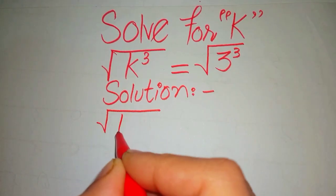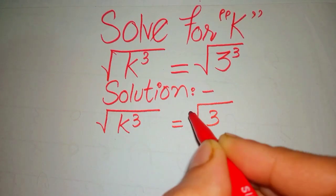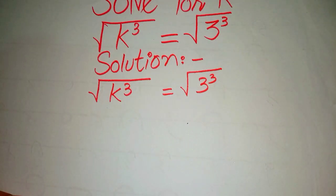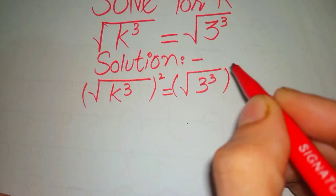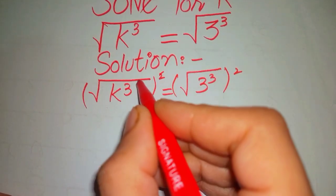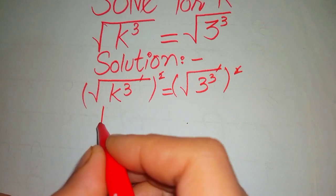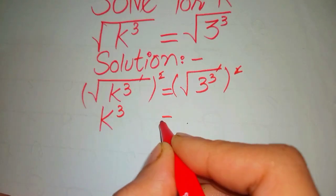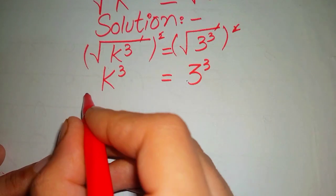We write our equation as k cubed equals square root of 3 cubed. Now we take the square on both sides of the equation to cancel the square root. This square cancels with this square root, and similarly on the other side. Our equation becomes k cubed equals 3 cubed.